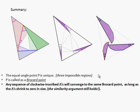Alright, so here's the summary. The equal angle point P is unique because if you try to move it in any of the three directions you're going to mess up the angles so they can no longer be equal. This point P is called a Brocard point and any sequence of clockwise inscribed triangles will converge to the same Brocard point as long as the triangles shrink to zero in size. The similarity argument still holds. Okay, that's it. Hope you enjoyed the talk.